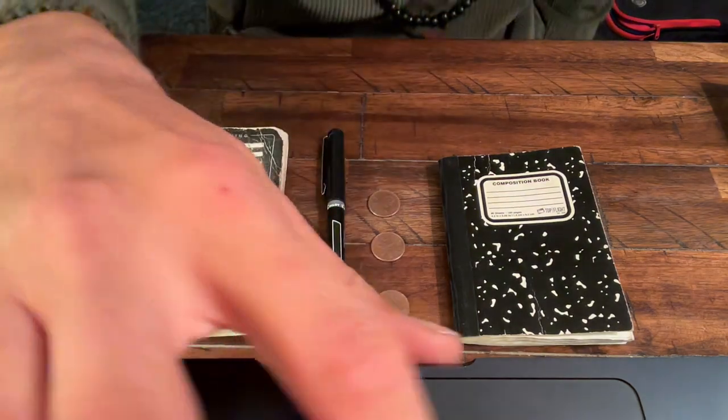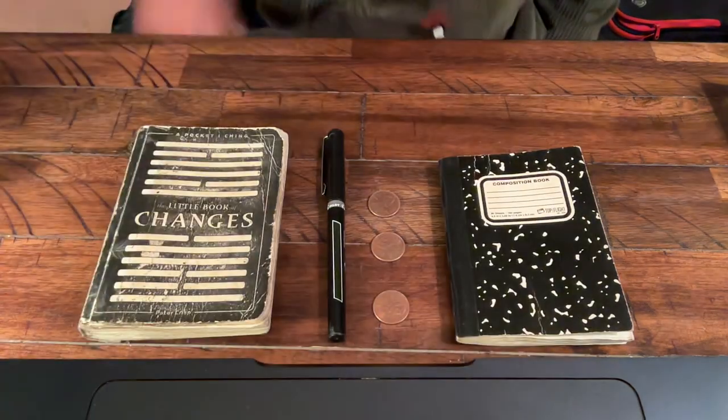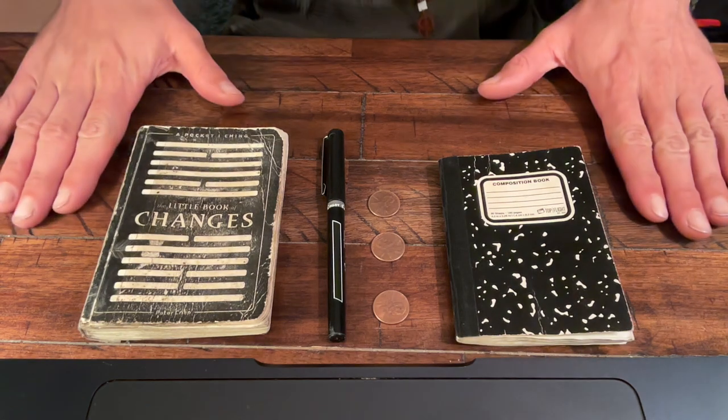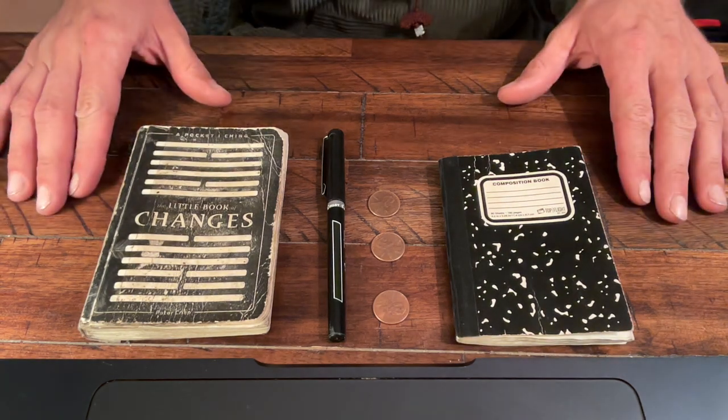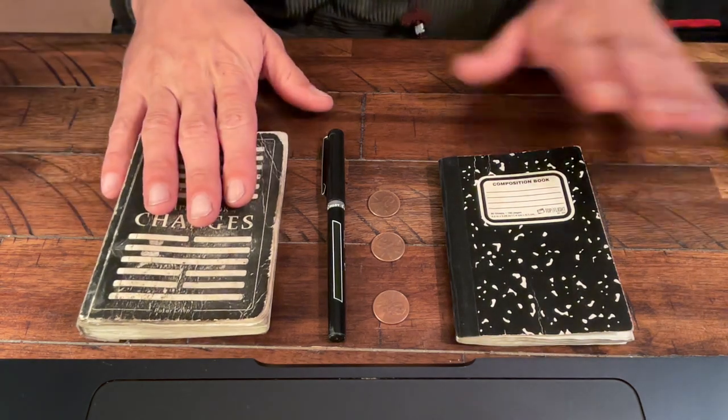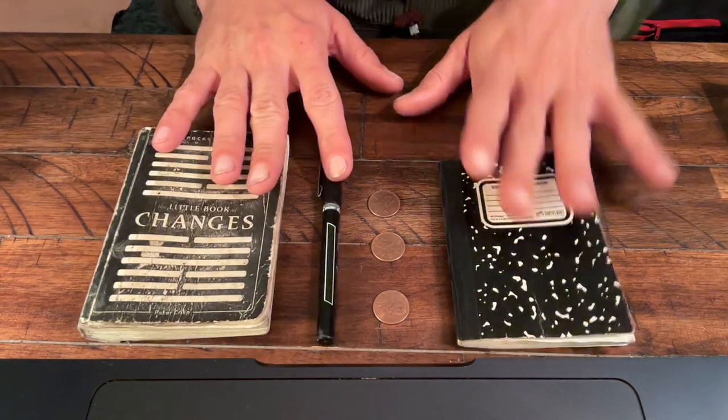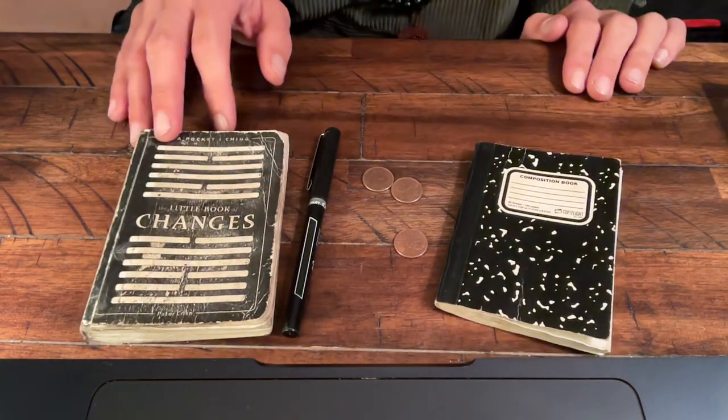Okay, so here we are. First hexagram reading. You'll need your book, a little something to write on, something to write with, and three coins.